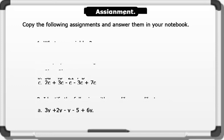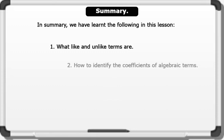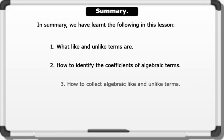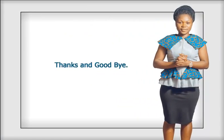In summary, we have learned the following in this lesson: one, what like and unlike terms are; two, how to identify the coefficients of algebraic terms; and three, how to collect algebraic like and unlike terms. I believe you enjoyed this lesson, see you in our next one. Thanks and goodbye.